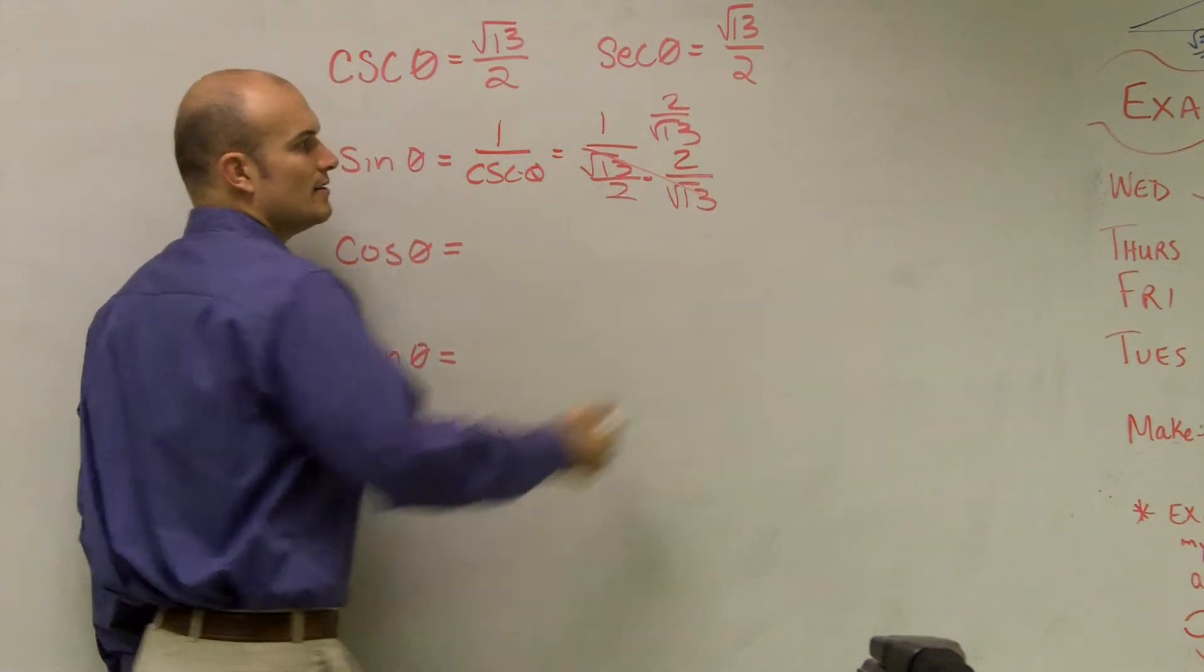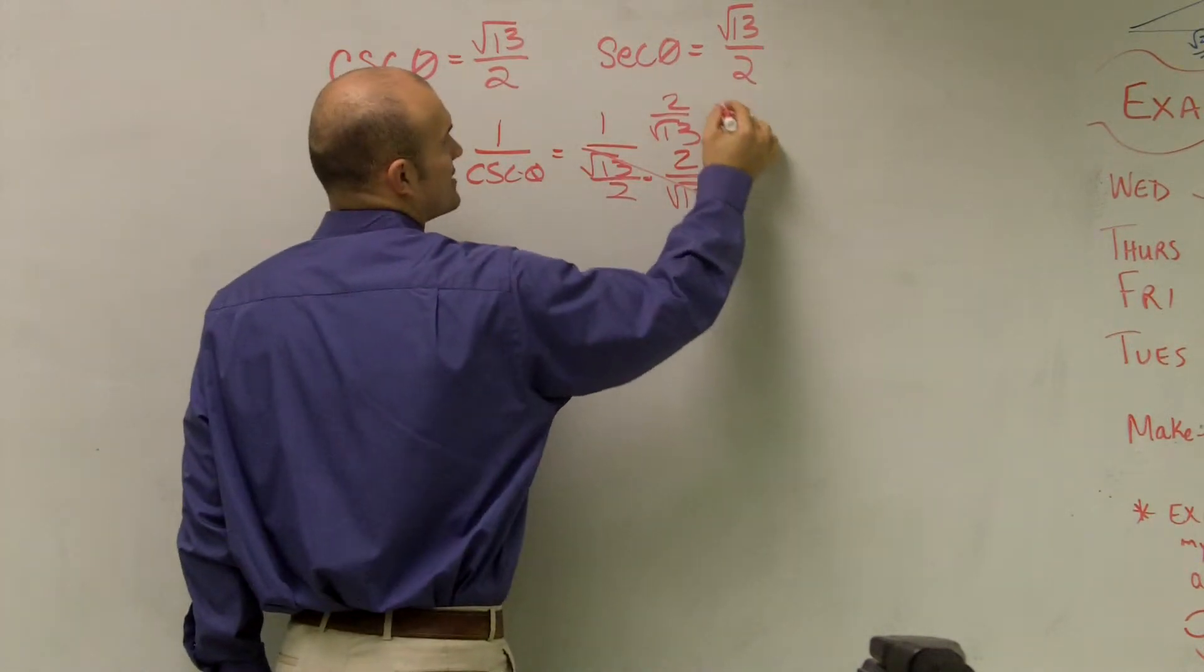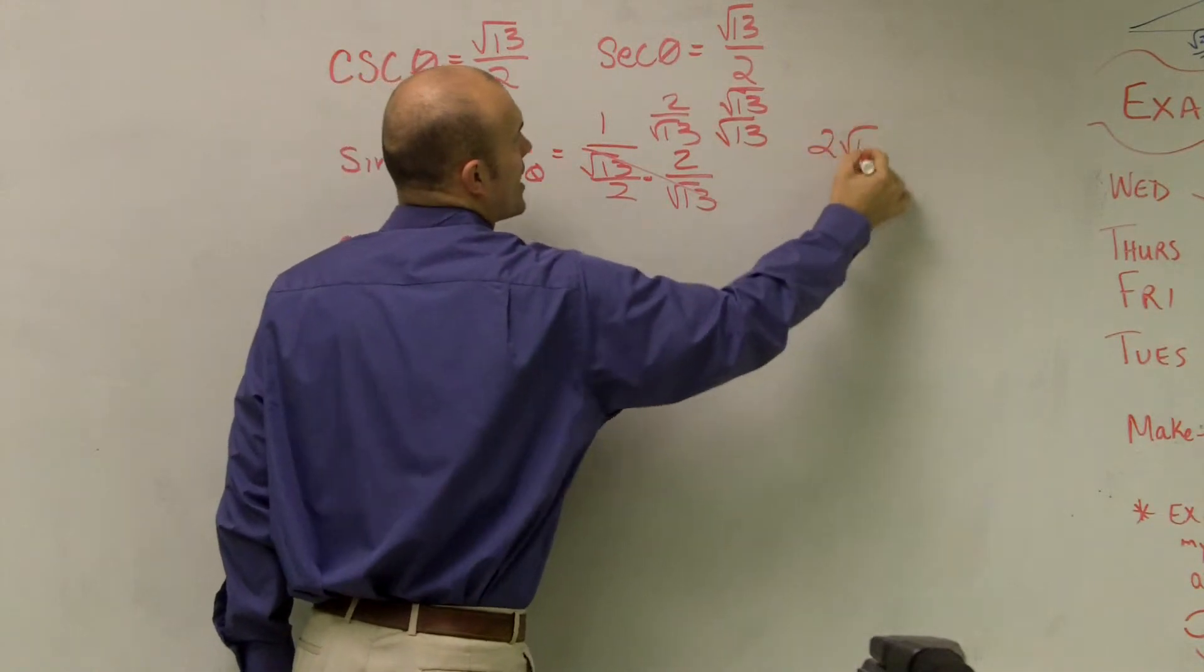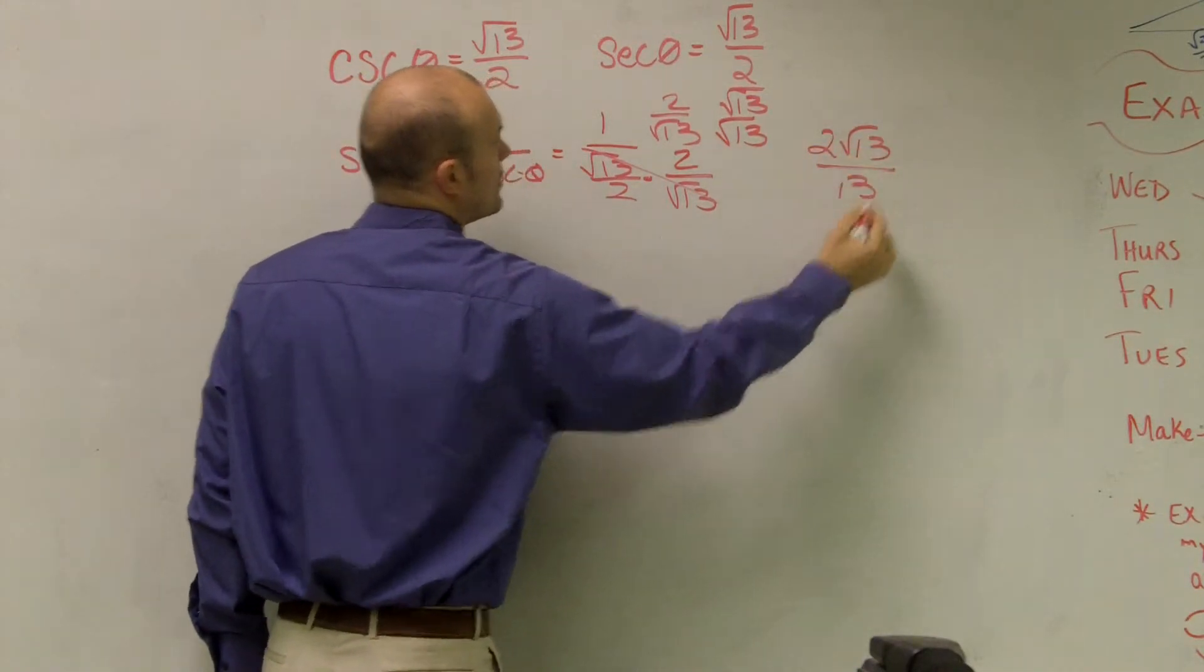That cancels to 1. Then I have to rationalize the denominator. So my final answer is 2 radical 13 over 13.